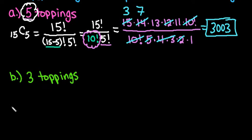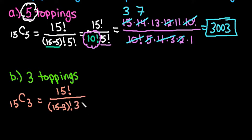The second one I wanted to look at is when we have three toppings. For this one, we would do 15C3, so when we set this up it would still be 15 factorial over 15 minus 3 factorial times 3 factorial.